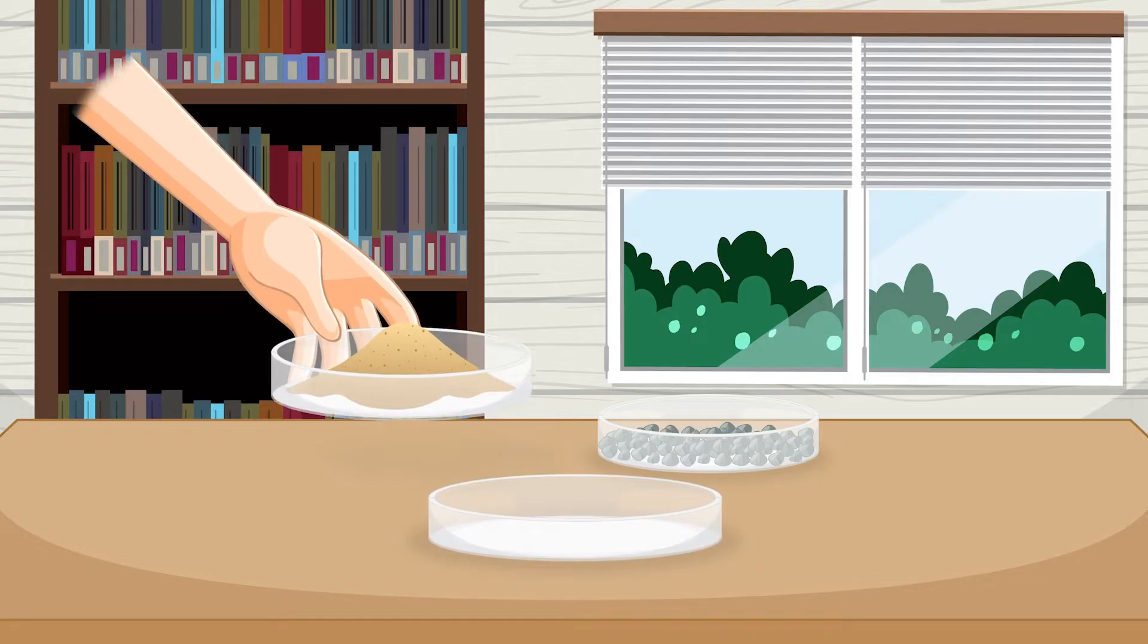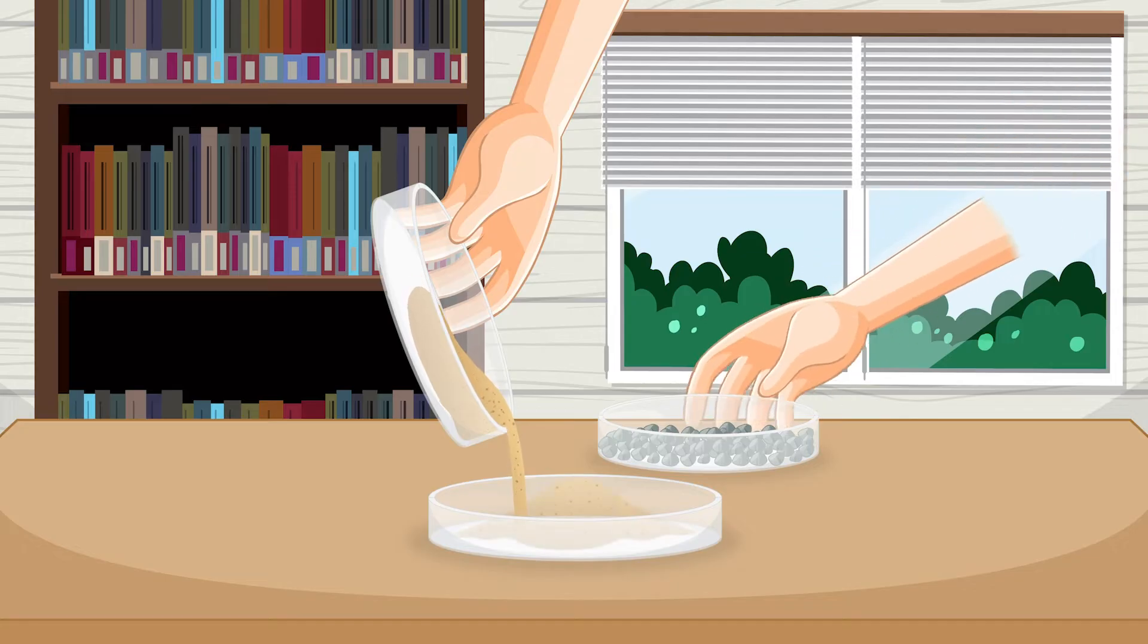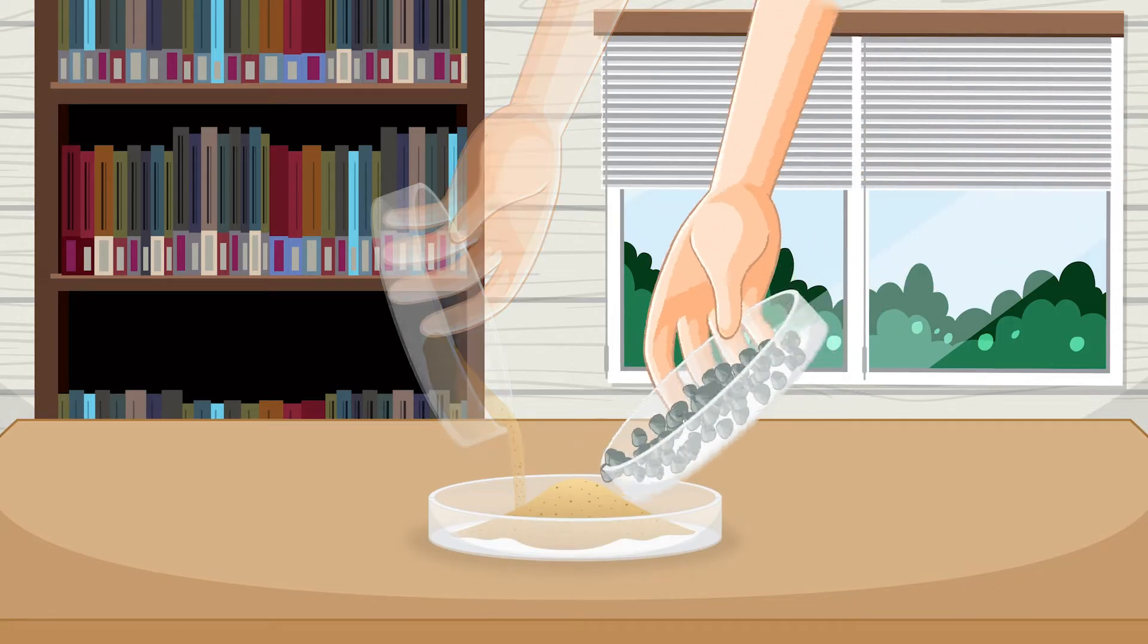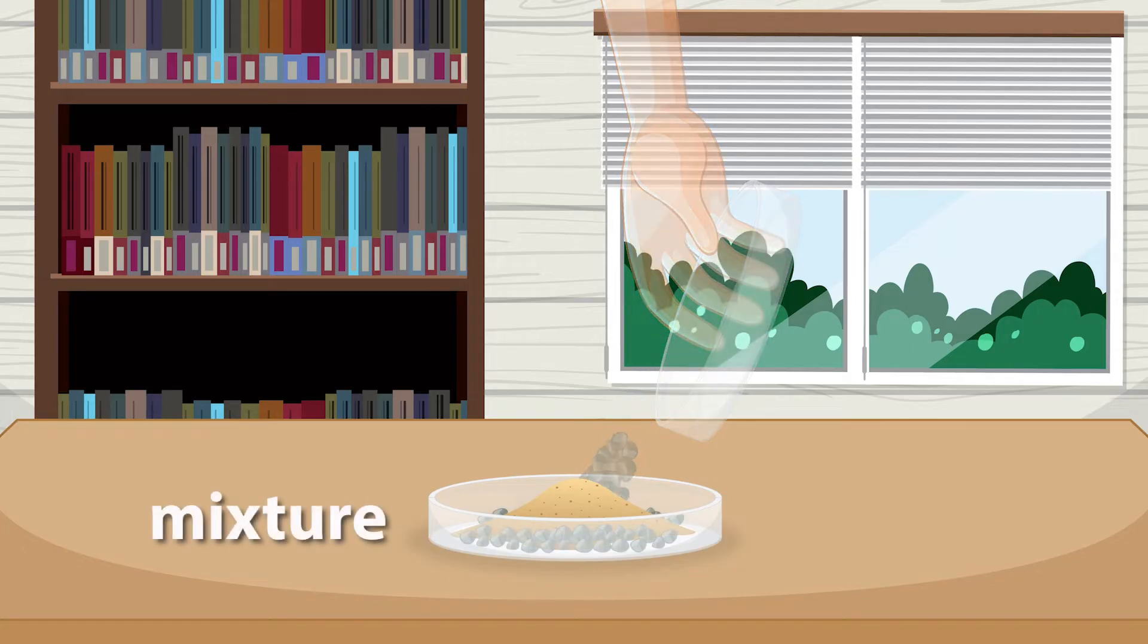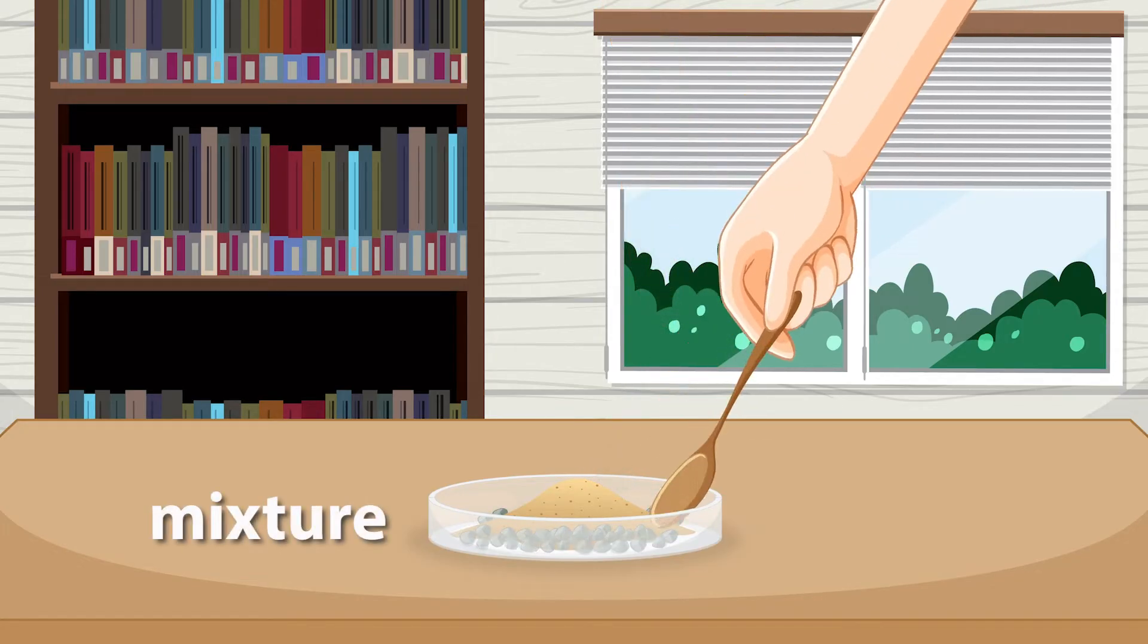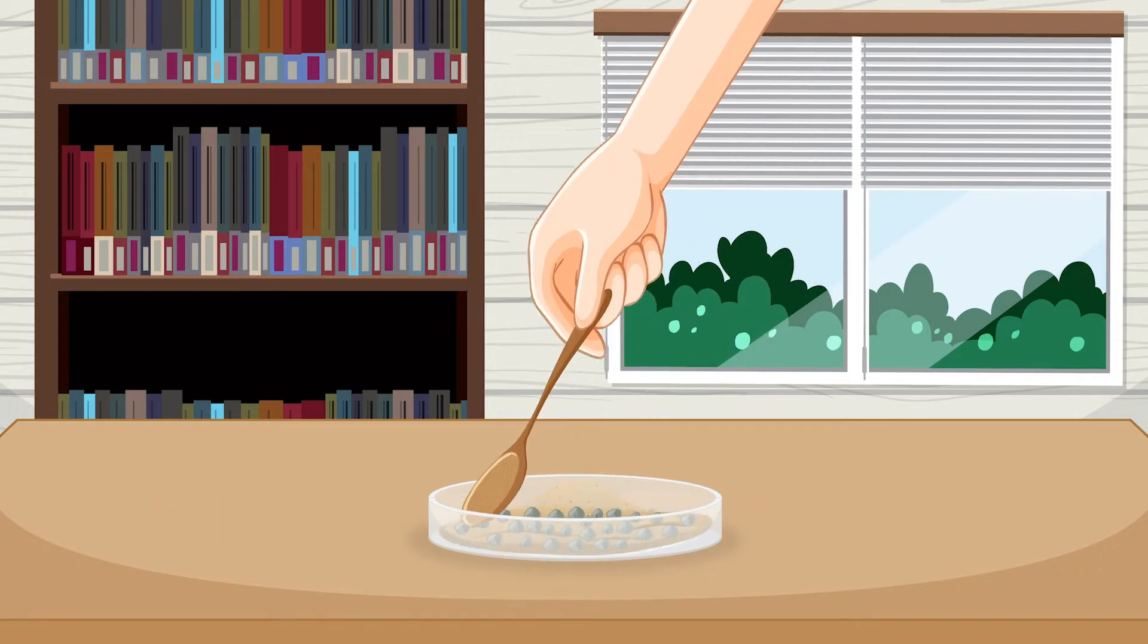Let's pour them into a larger container and give it a stir. This forms a mixture of sand and gravel. The two materials are now combined and the individual grains of sand and pieces of gravel are distributed throughout the mixture.